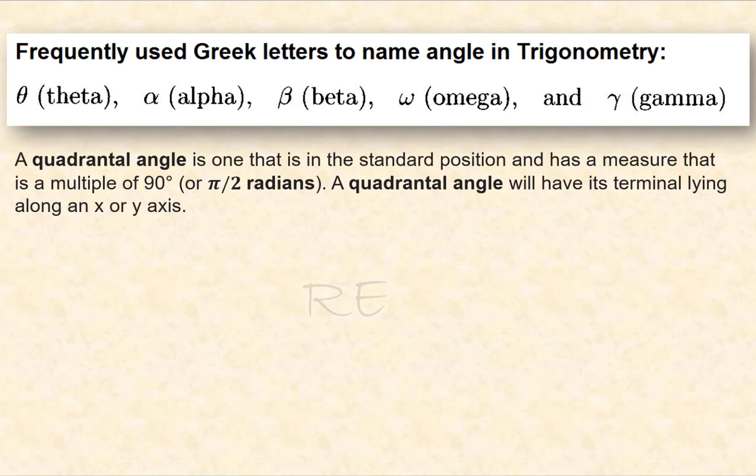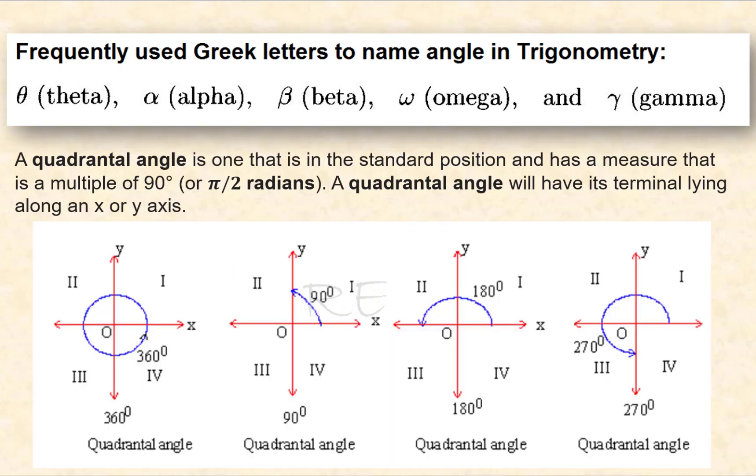A quadrantal angle is one that is in standard position and has a measure that's a multiple of 90 degrees or pi over 2 radians. A quadrantal angle will have its terminal lying along the x or y-axis. Different examples of quadrantal angles: 360, 90, 180, and 270.